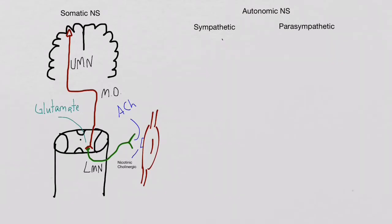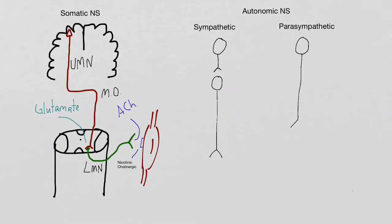Now we're moving to the autonomic or involuntary nervous system. In the sympathetic nervous system, you will find short preganglionic fibers and long postganglionic fibers. In the parasympathetic nervous system, you're going to find long preganglionic fibers and short postganglionic fibers. These fibers are described as either being before or after the ganglion found in the autonomic nervous systems.